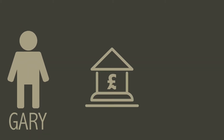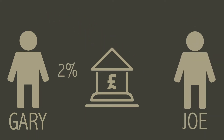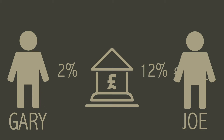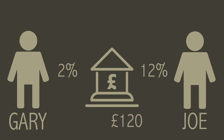For example, Gary puts £1,000 in a savings account at an annual rate of 2%. Joe wants a loan from the bank for £1,000. The bank agree and the interest rate is 12%. The bank takes Gary's £1,000 and gives it to Joe. The bank will then pay Gary back his £1,000 plus the £20 gained from his 2% interest. When Joe pays back the bank with the £1,000 he borrowed, he pays back an extra £120 due to his 12% interest. The bank has now made £100 from loaning Gary's money out to Joe, but they only paid Gary £20 for borrowing the money from him in the first place.